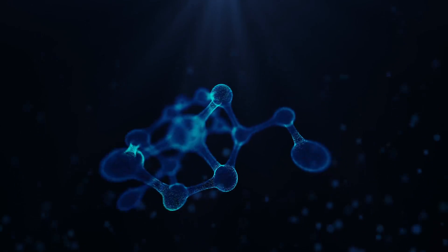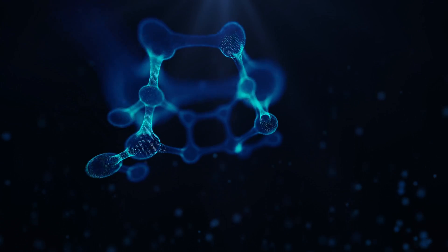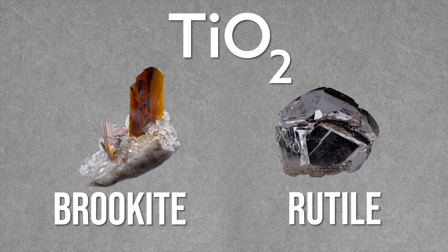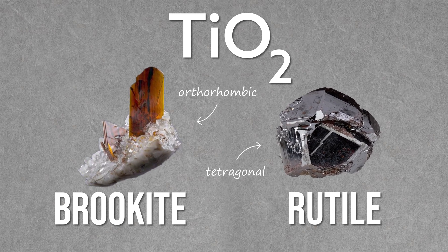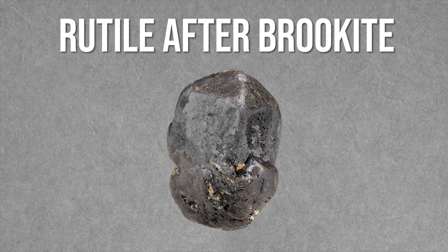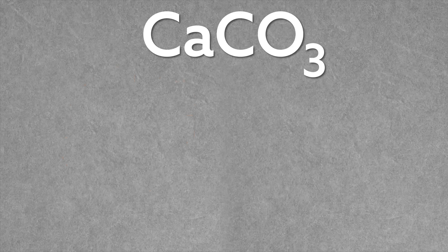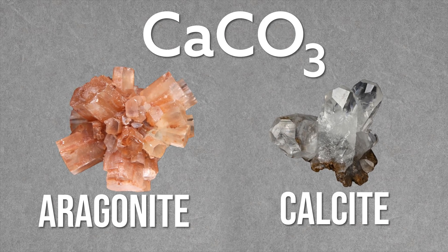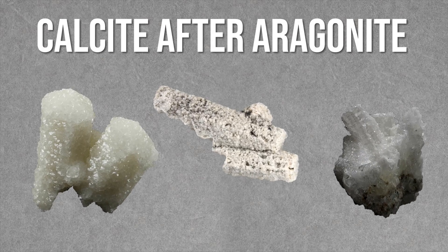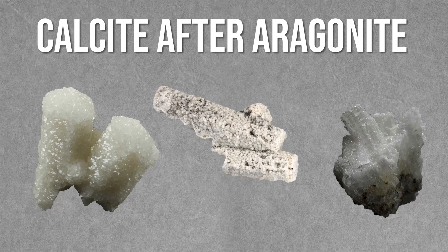Next are paramorphs. These are interesting because they represent a change only on the molecular level. A paramorph begins with two minerals of the same chemical composition, but different crystal structures. As the original mineral encounters destabilizing conditions, it slowly transforms into the second, chemically identical mineral, but keeps its original shape. An example of this is aragonite and calcite. They're both calcium carbonate, and they both like to form in low-temperature conditions. However, aragonite is less stable than calcite, and given the right conditions, it will slowly turn into calcite but keeps its original orthorhombic, four-sided crystal shape.